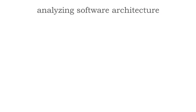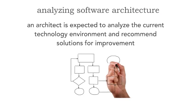When we talk about analyzing software architecture, this is one of the core expectations of an architect — to continuously analyze the current technology environment and continually recommend solutions for improvement. This is called architecture vitality, and let me give you an example of why this is necessary even for existing applications.